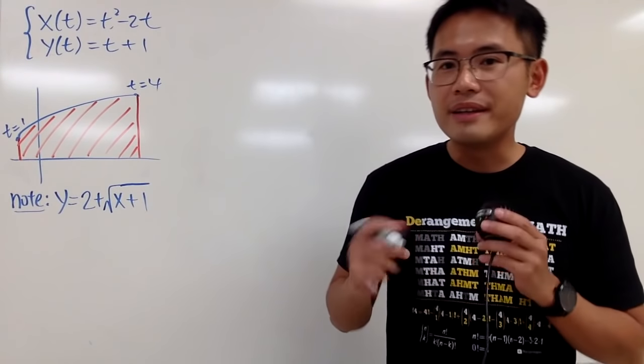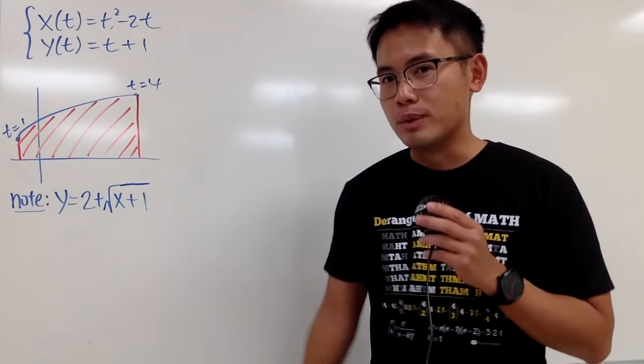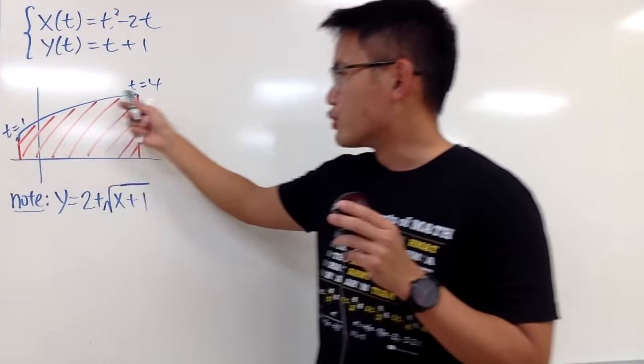Okay, in this video, we're going to see how to find the areas with parametric equations. And we are still talking about the same parametric equations from the previous videos. And this time, we just want to focus on this portion of the curve, from t is 1 up to 4. And we want the area of this region.